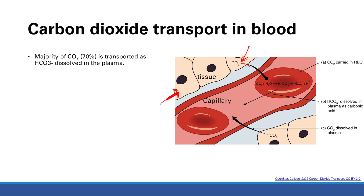We see that CO2 gets kicked out, then the CO2 undergoes a reaction with water through carbonic anhydrase, and it's going to make H2CO3, and that's going to turn into bicarb and H+. This bicarb is going to dissolve into water — that's how the majority of carbon dioxide is going to be transported. It's dissolved in plasma.